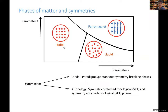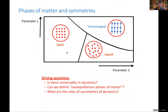In the case of topological order, we usually consider the ground state when there's a gap. The driving question I want to ask is: is there universality away from equilibrium? Is there universality in dynamics? Can we define non-equilibrium phases of matter, and what are the roles of symmetries in characterizing these phases? I want to talk about something very far away from equilibrium.